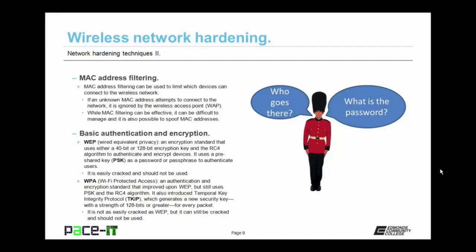Better than WEP is WPA, Wi-Fi Protected Access. It's an authentication and encryption standard that improved upon WEP, but still uses PSK and the RC4 algorithm. To increase security, it also introduced Temporal Key Integrity Protocol, or TKIP. TKIP generates a new security key for every packet, and that new security key has a strength of 128 bits or greater. It's not as easily cracked as WEP, but it can still be cracked and should not be used unless absolutely necessary.